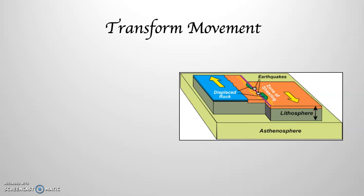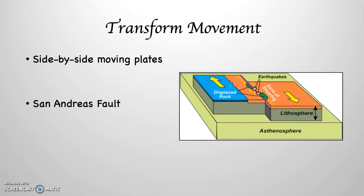Transform movement happens when the plates move side by side. And this is, of course, what the San Andreas Fault is. The San Andreas Fault is formed where the Pacific and North American plates move next to each other.